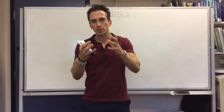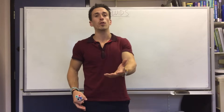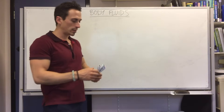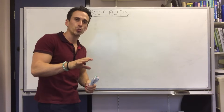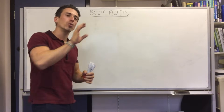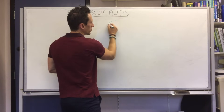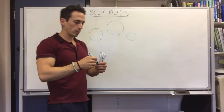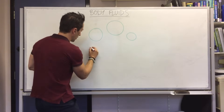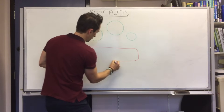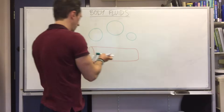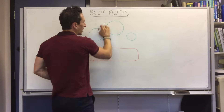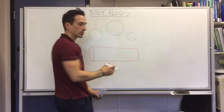So where is this fluid — basically water with some solutes mixed in — actually sitting? There are two major compartments that body fluids sit within. If we draw some cells and a blood vessel, you find that fluid sits within the cells, fluid sits outside and between the cells, and fluid sits within the blood vessels — three different places.